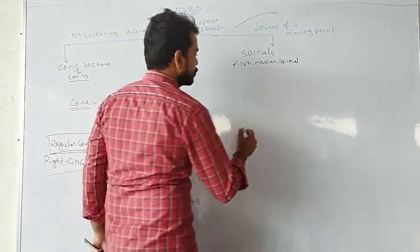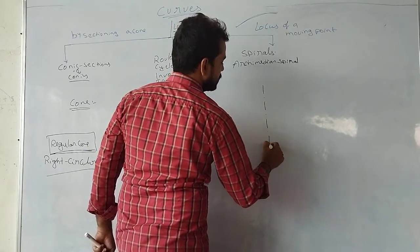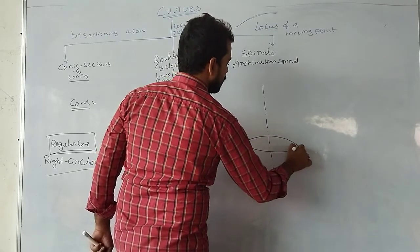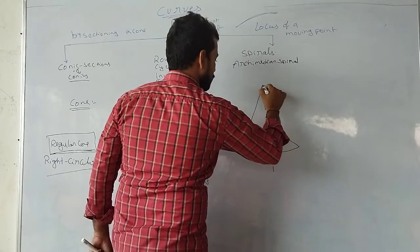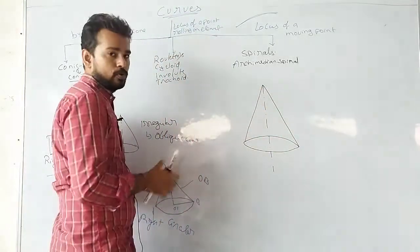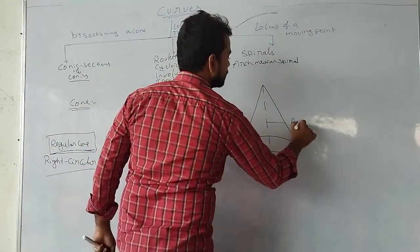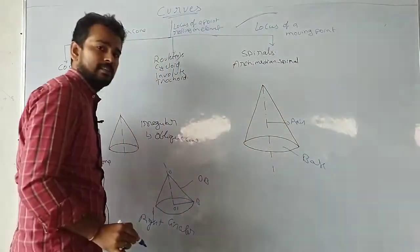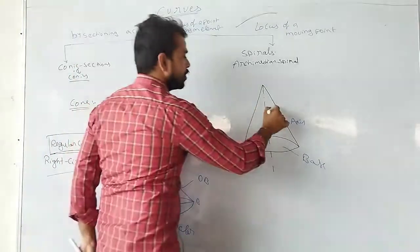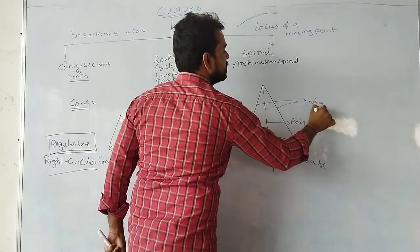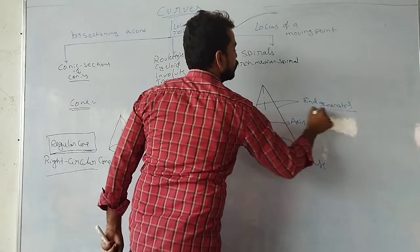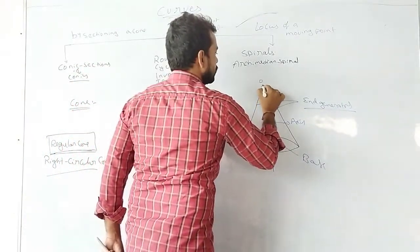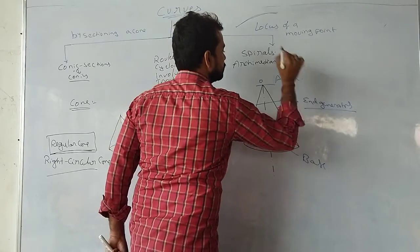Now I will tell you the nomenclature of this cone. This is the axis line. In this cone, this portion is called the axis, and this is known as the base. These two are known as end generators. And this point O is called the apex.